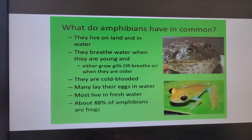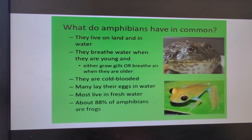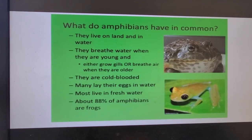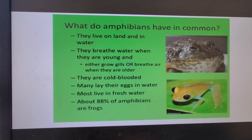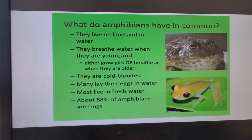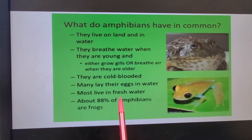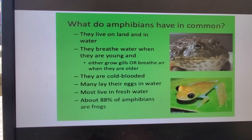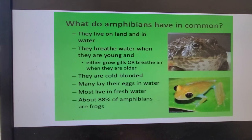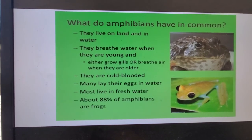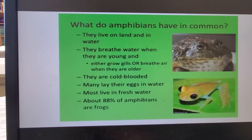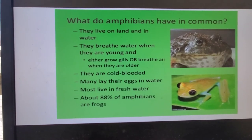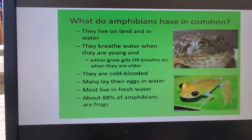Warm-blooded animals, like humans, can actually produce their own heat, which helps digest the food we eat. Amphibians also lay eggs, but they lay them in fresh water, and their eggs are more gelatinous — they don't have a hard shell like you'd see in a bird egg or a reptile egg. They live mainly in fresh water, and about 88% of amphibians are actually frogs.